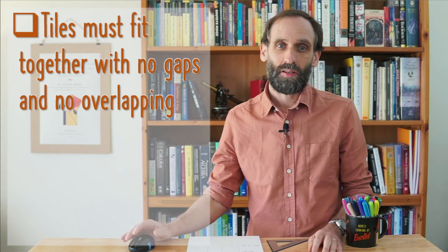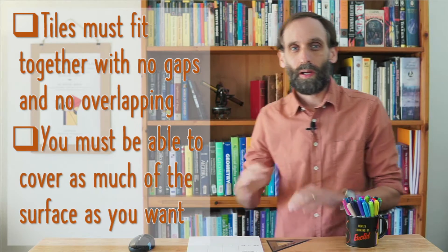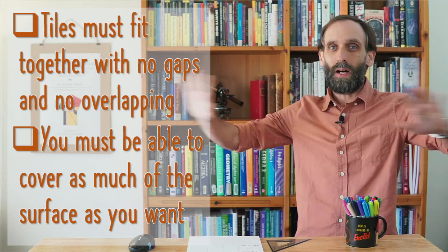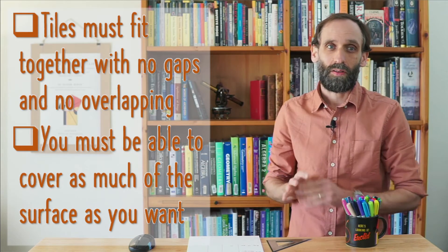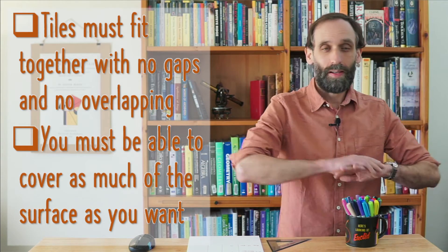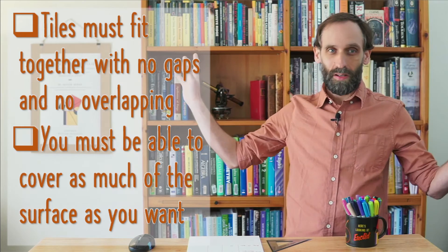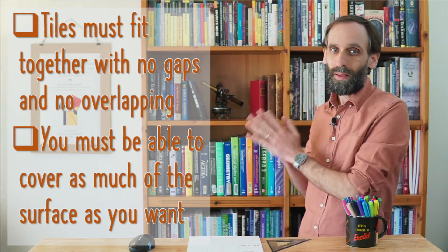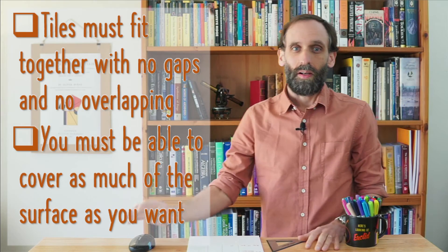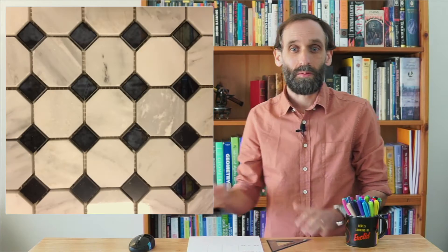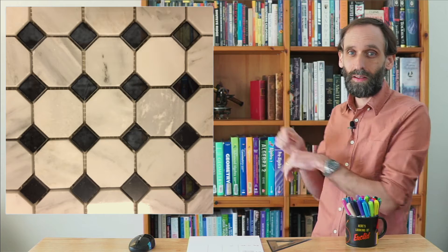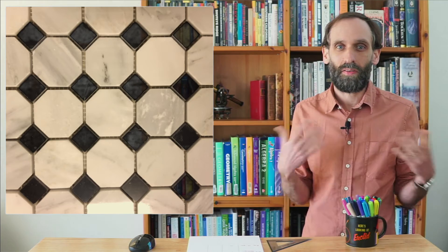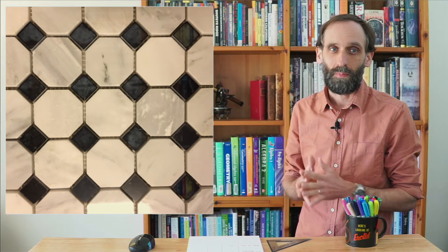The second condition is this: we want to be able to cover as much of the surface as we want. So if we had a floor that was miles and miles long, we want to be able to cover the entire surface with these tiles. If we look at this picture, it seems pretty clear that this tiling could keep going on and on indefinitely, covering as much space as we might want it to.